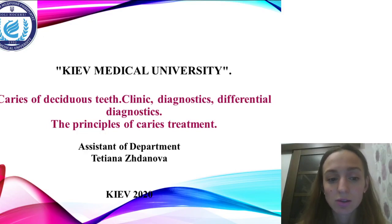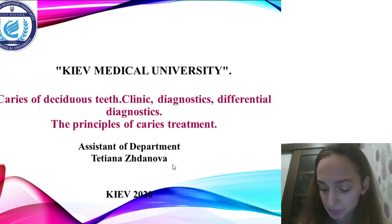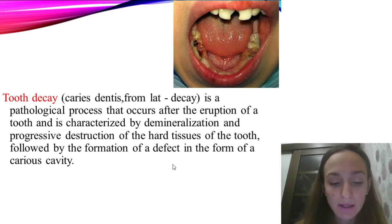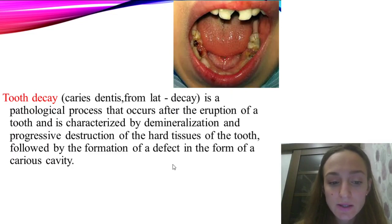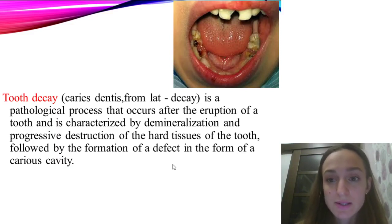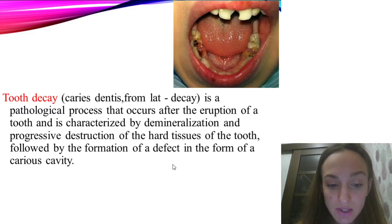Tooth decay or dental caries is a pathological process that starts after tooth eruption. It is characterized by demineralization and destruction of hard tissues of teeth, followed by formation of a defect — the carious cavity. According to World Health Organization recommendations, there are three basic indicators for assessment of affection with dental caries.